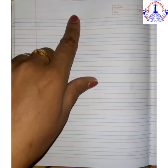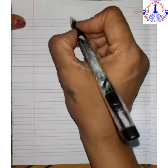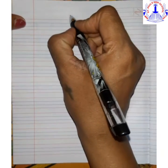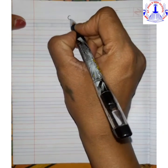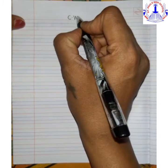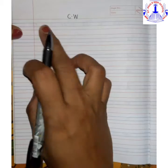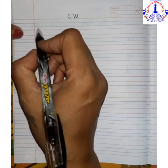Now we are going to learn how to write cursive letter Y. Here you have to write today's date, and here we are going to write C.W. So write C.W. Now let's start writing cursive letter Y.